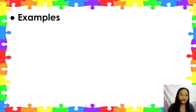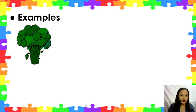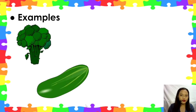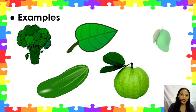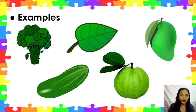Let's have some examples of pictures that are green. Broccoli, cucumber, leaf, guava, and mango. If the mango is color green, it is unripe.